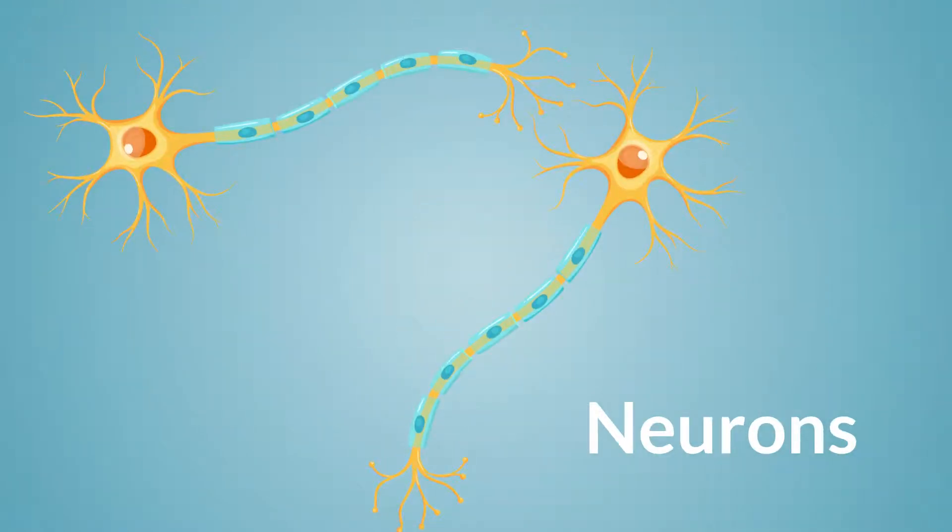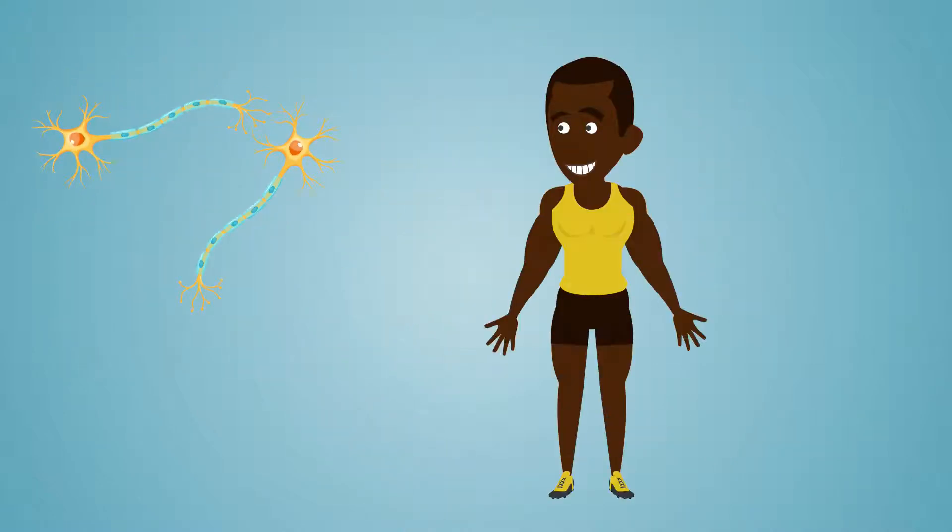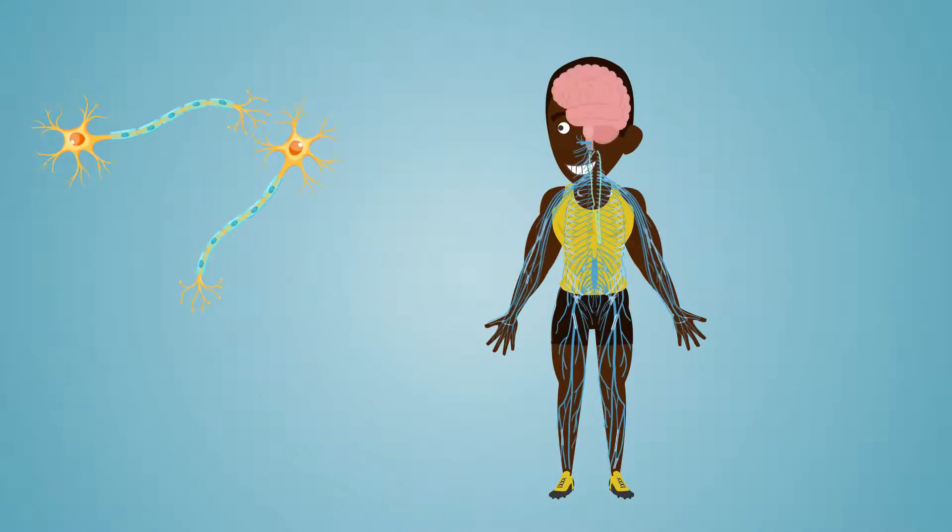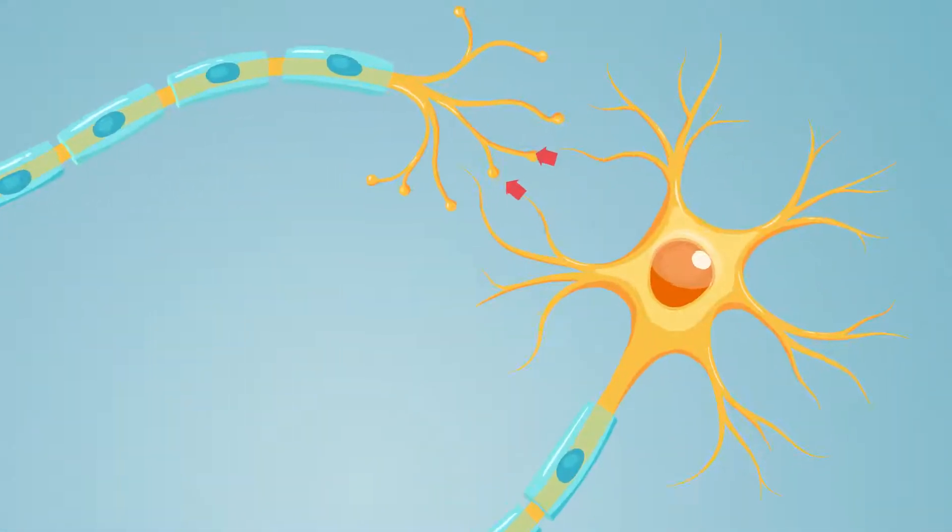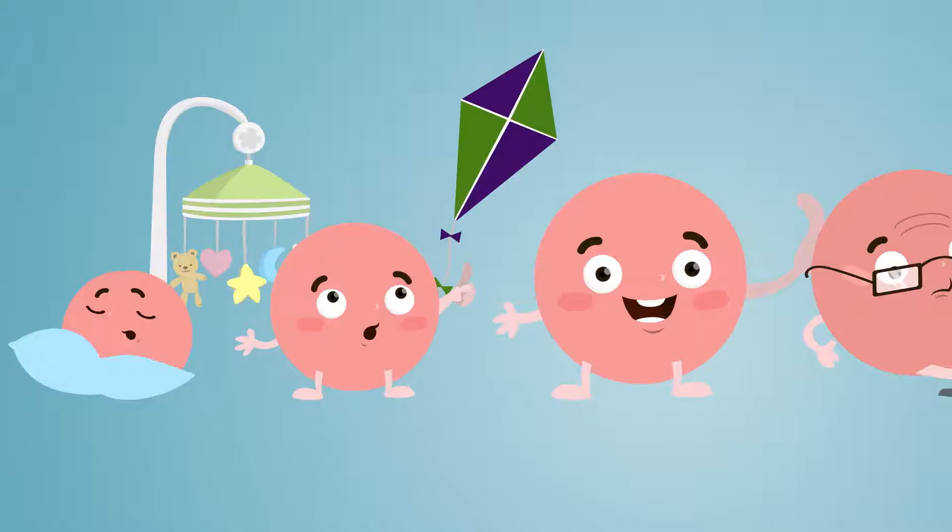These are neurons. These cells are elongated so that they can carry messages around the body to and from the brain. They send these messages to each other through little extensions they have on each side of the cell.